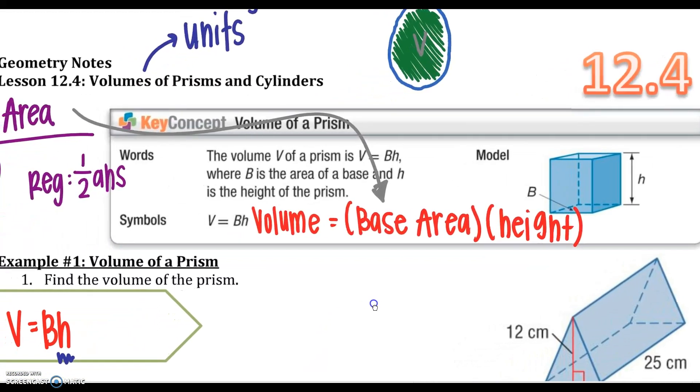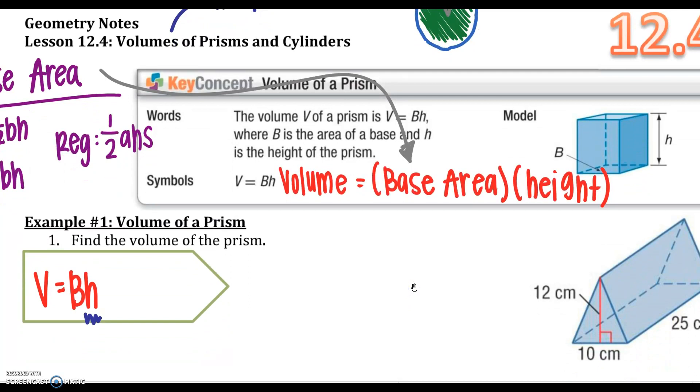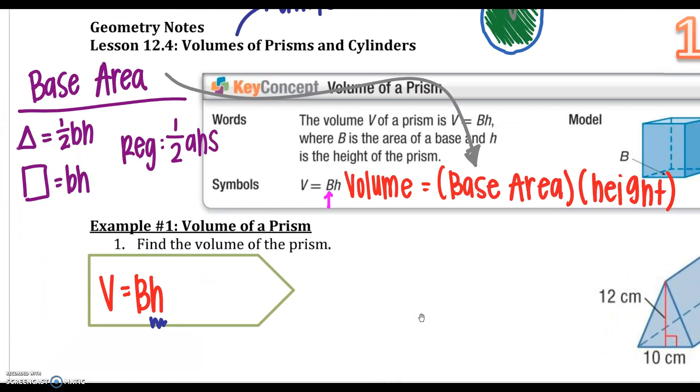The volume of prisms and cylinders will be in section 4. The volume of a prism, remember prisms have two bases. Those bases that are congruent are connected with rectangles. Your volume is going to be big B times your height. Remember the big B is literally talking about a triangle or a square or a rectangle or a regular polygon. It is talking about a 2D object. We're going to find the base of that and then your height is the distance from base to base.